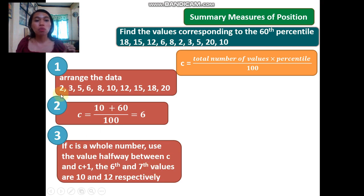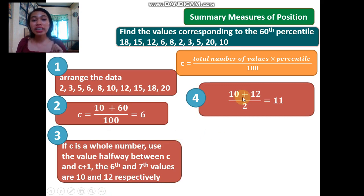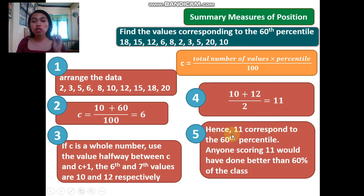Counting to the 6th position gives us 10, and the 7th position is 12. The fourth step is to find the halfway point: (10 + 12) divided by 2 equals 11. Therefore, 11 corresponds to the 60th percentile. Anyone scoring 11 would have done better than 60% of the class.